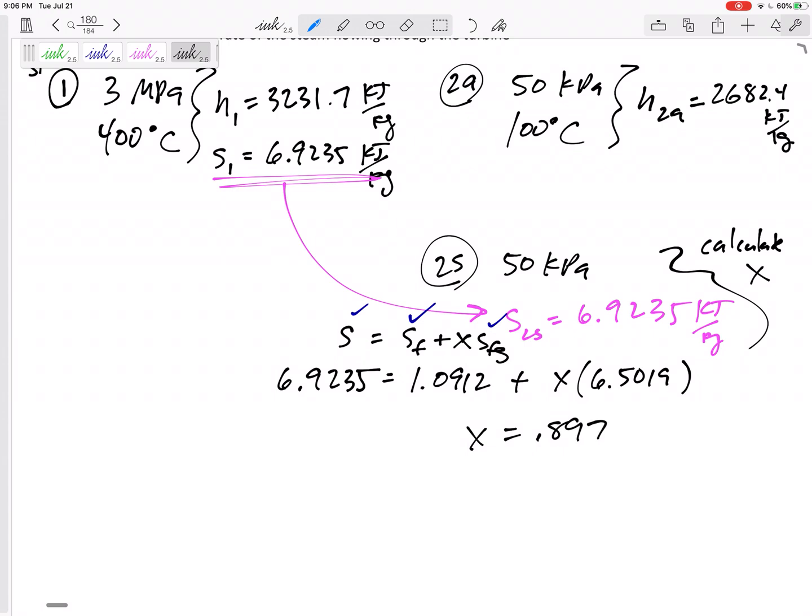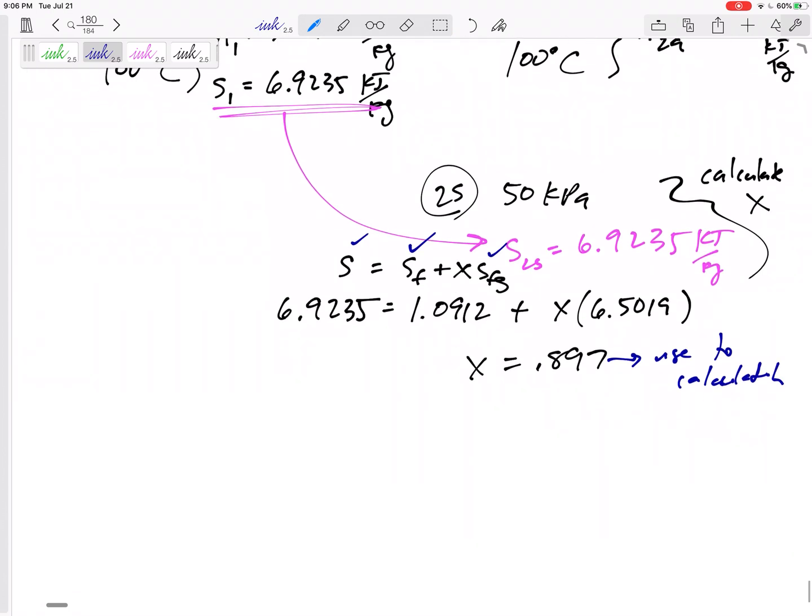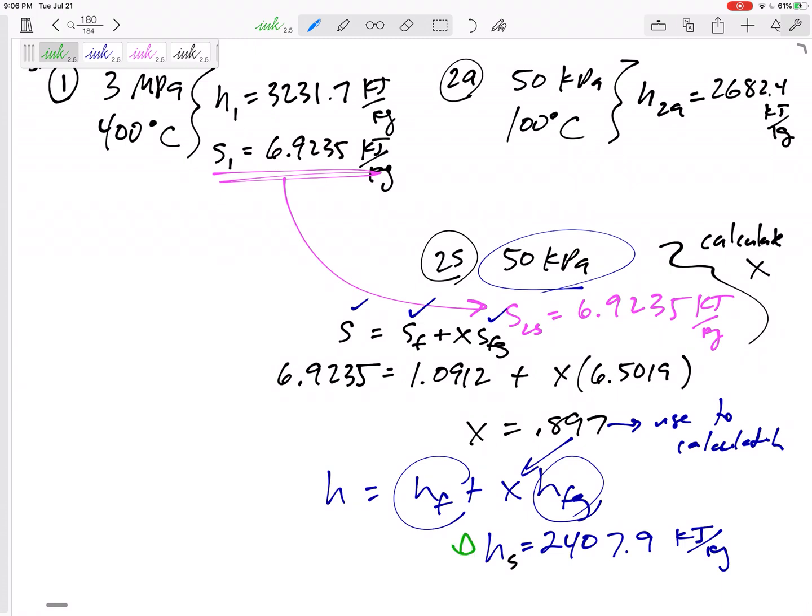All right, so why did I do that? I did that so that now I can calculate h. Now I can calculate h using that quality. To find the h I do hf plus x hfg. 0.897 - this is from the property table A5 at a pressure of 50 kPa. Here, I would get the h 2407.9 kilojoules per kilogram. That is the h2s.